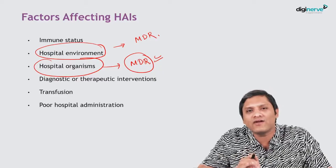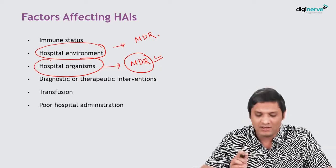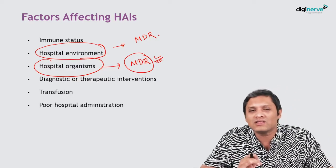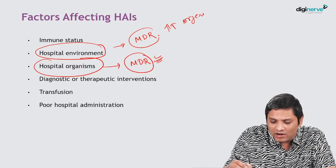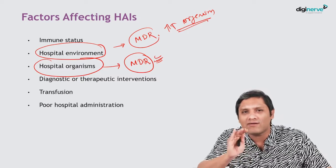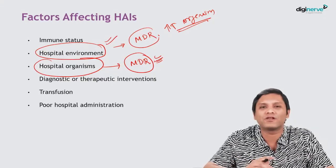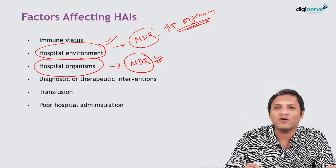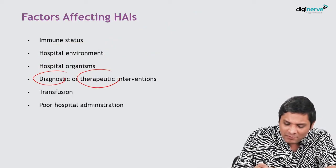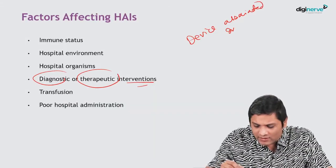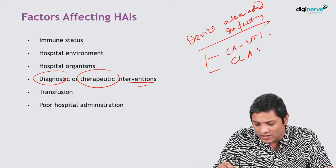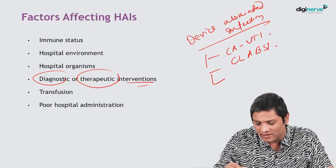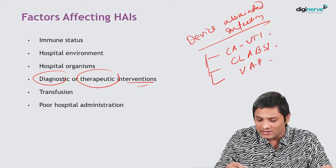Therefore, hospital organisms can infect patients who are already on antibiotics. Hospital organisms are more lethal than community organisms, and the hospital environment has a higher burden of microorganisms than the community environment. Next are diagnostic or therapeutic interventions performed on the patient. The classical example is device-associated infection. The three important examples are: catheter-associated UTI, central line-associated bloodstream infection, and ventilator-associated pneumonia.